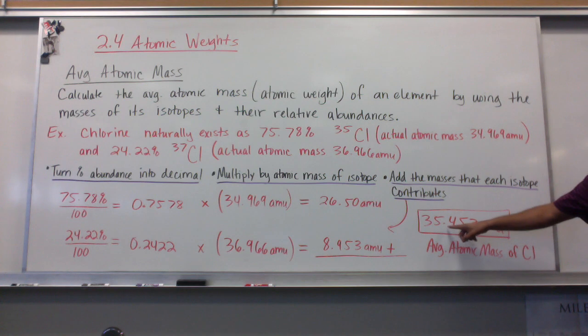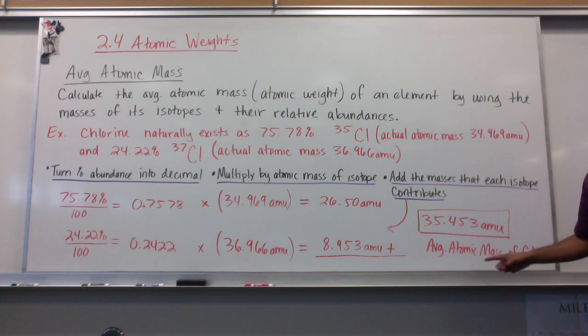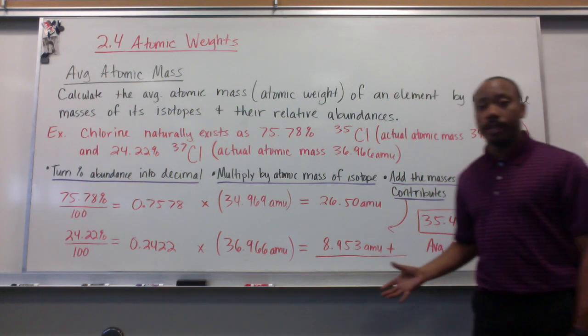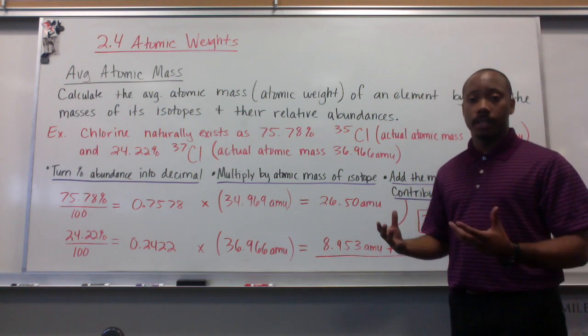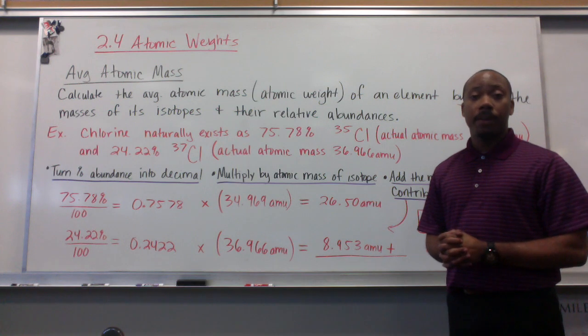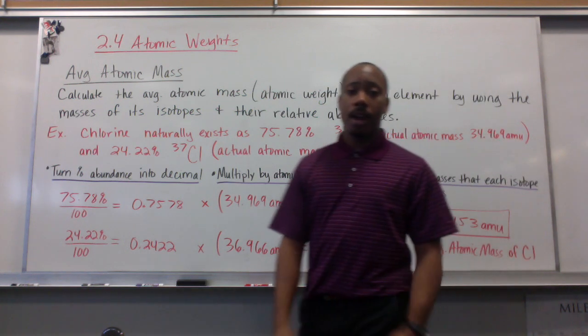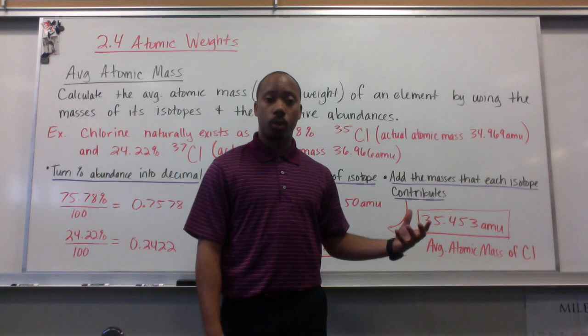Which gives us 35.453 AMUs. This is the average atomic mass of a chlorine atom, or of chlorine, the element. Check any periodic table, and you can verify that that number is under chlorine.